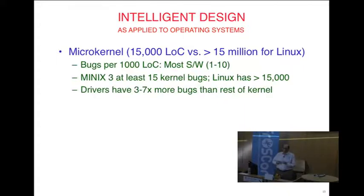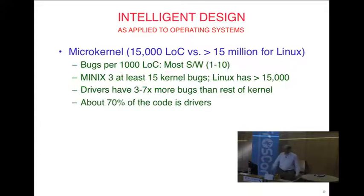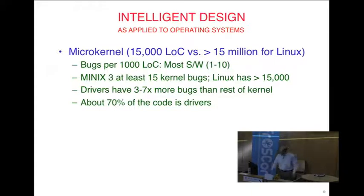Drivers typically have three to seven times more bugs than everything else because nobody studies the Epson 2156 printer driver — it's enormously complicated. And 70% of the code is drivers. Although open source means people can look at it, in reality nobody ever does. What you need is highly modular systems where the operating system runs as multiple user mode processes not in the kernel, with these things separated from each other.